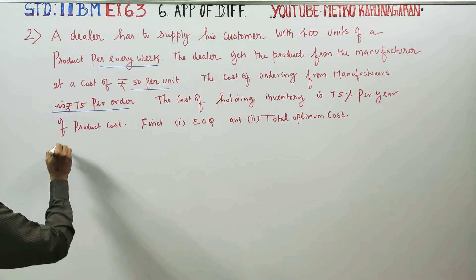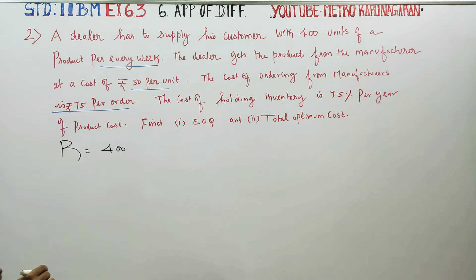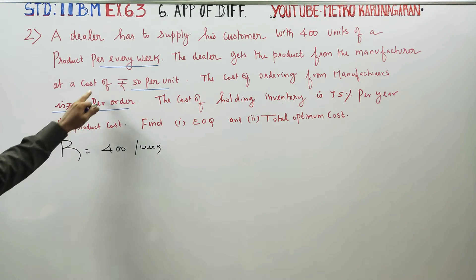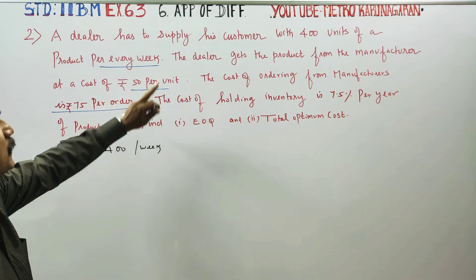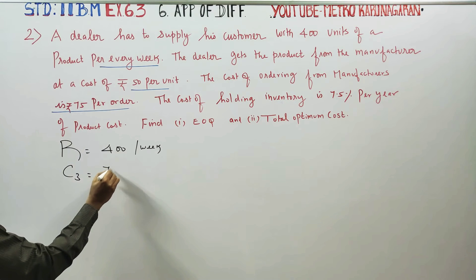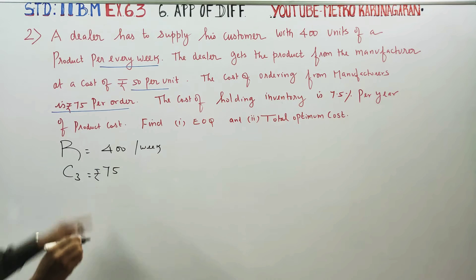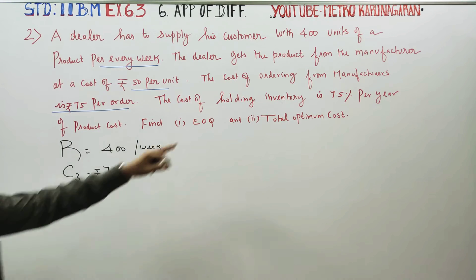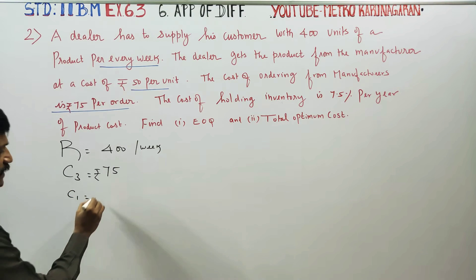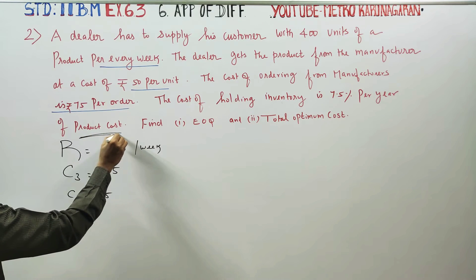I will start with my requirements. Per week demand R = 400 units per week. Cost is Rs. 50 per unit. Ordering cost C3 = Rs. 75 per order. Holding cost is C1.